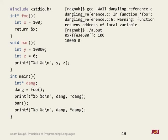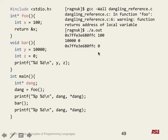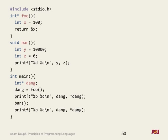Then it prints out 10000 and 0 for bar's y and z variables. Then it prints 'dangling' again — the address doesn't change because 'dangling' itself is stack-allocated inside main's scope. But instead of 100, what's at that memory address is now 0. The value inside changed — super weird.